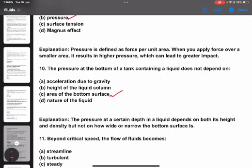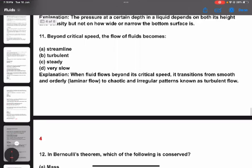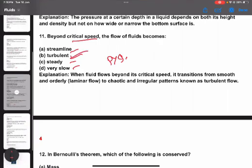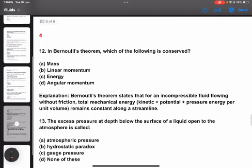Question number eleven: Beyond critical speed, the flow of fluids becomes streamline, turbulent, steady, or slow. The answer is turbulent. Question number twelve: In Bernoulli's theorem, which of the following is conserved? Is it mass, linear momentum, energy, or angular momentum?